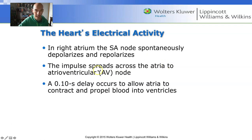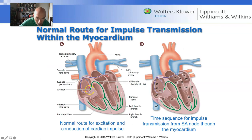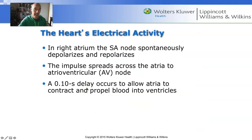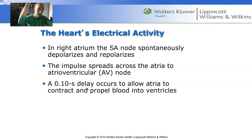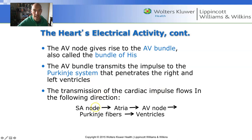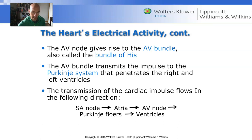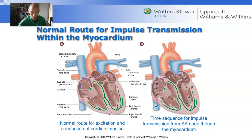There is a delay between atrial and ventricular contraction known as the AV nodal delay — about 0.1 seconds — which allows as much blood as possible to move into the ventricles before they contract. The full sequence: SA node through the atria to the AV node, then down the bundle branches to the Purkinje fibers, and finally into the ventricles — all occurring in about 0.2 seconds. Very rapid.